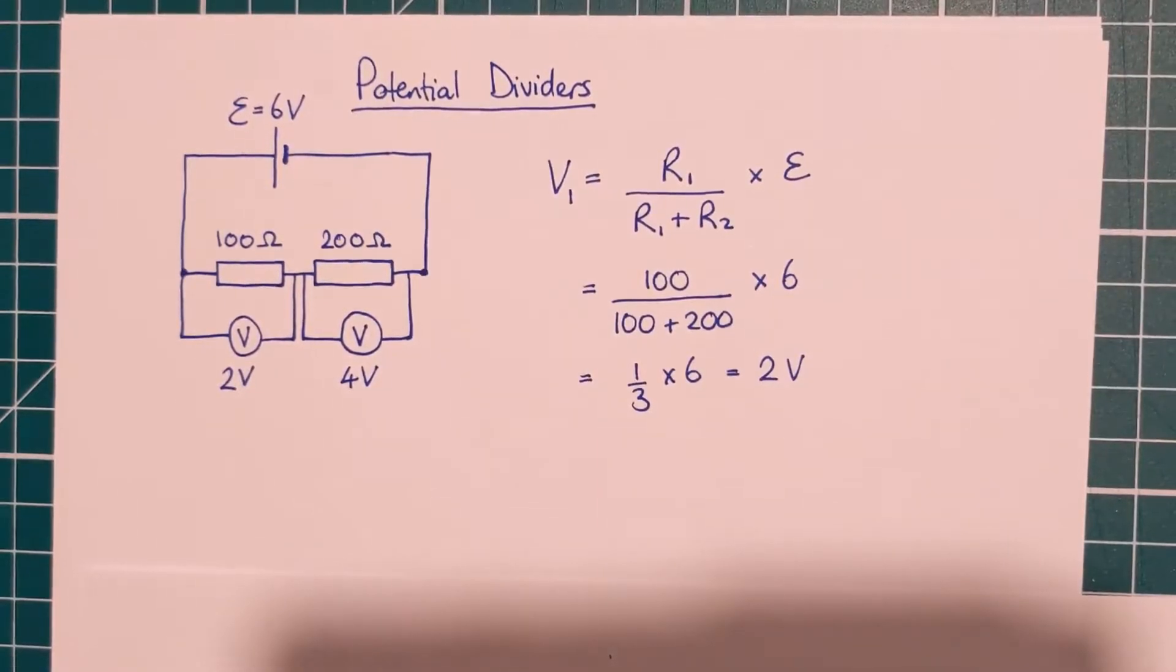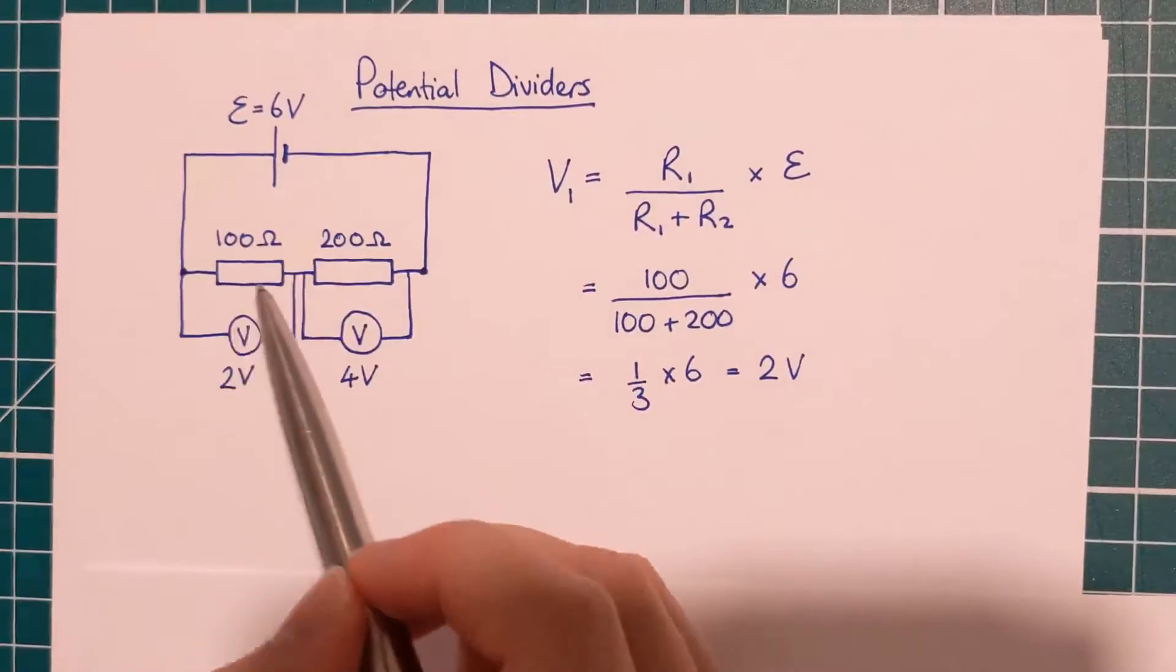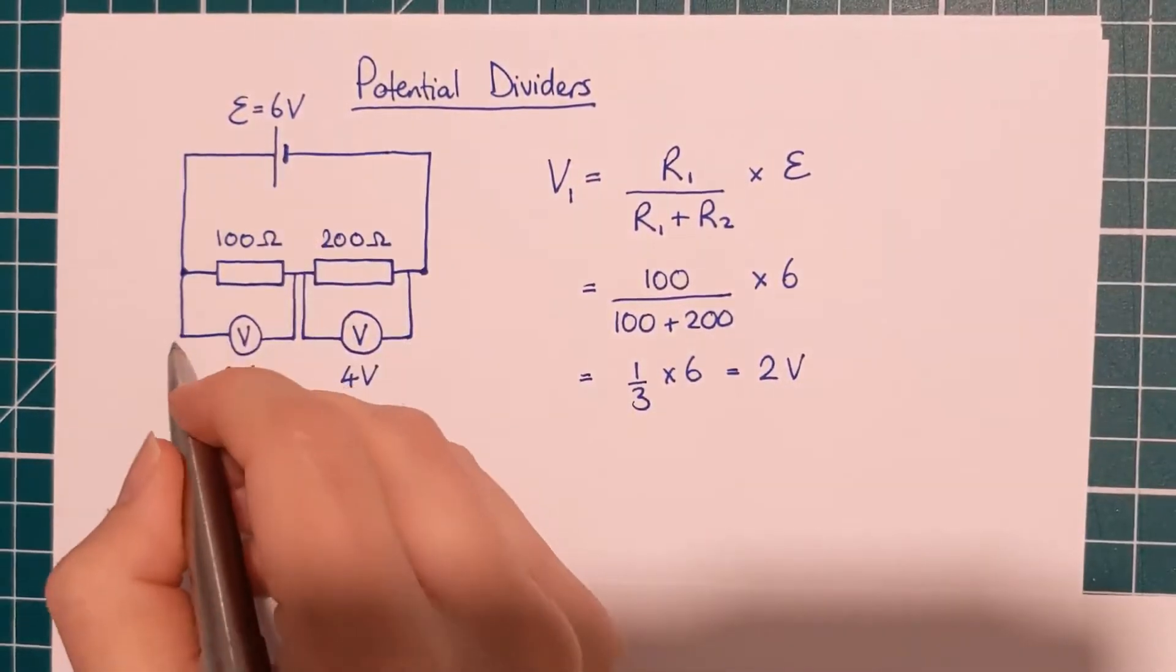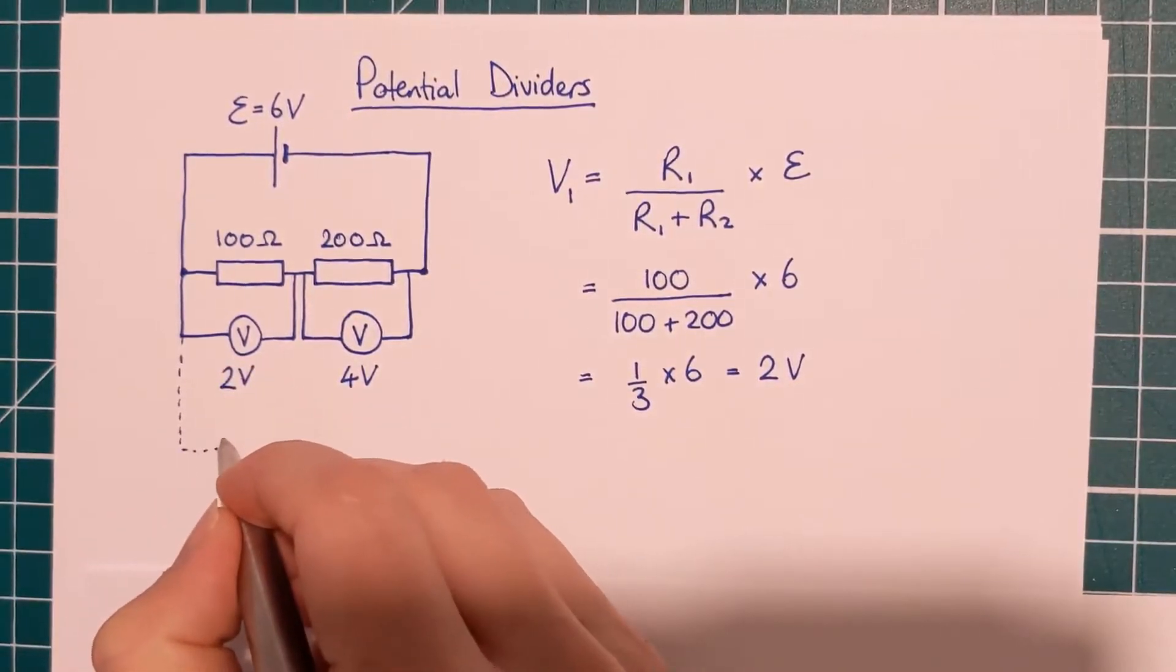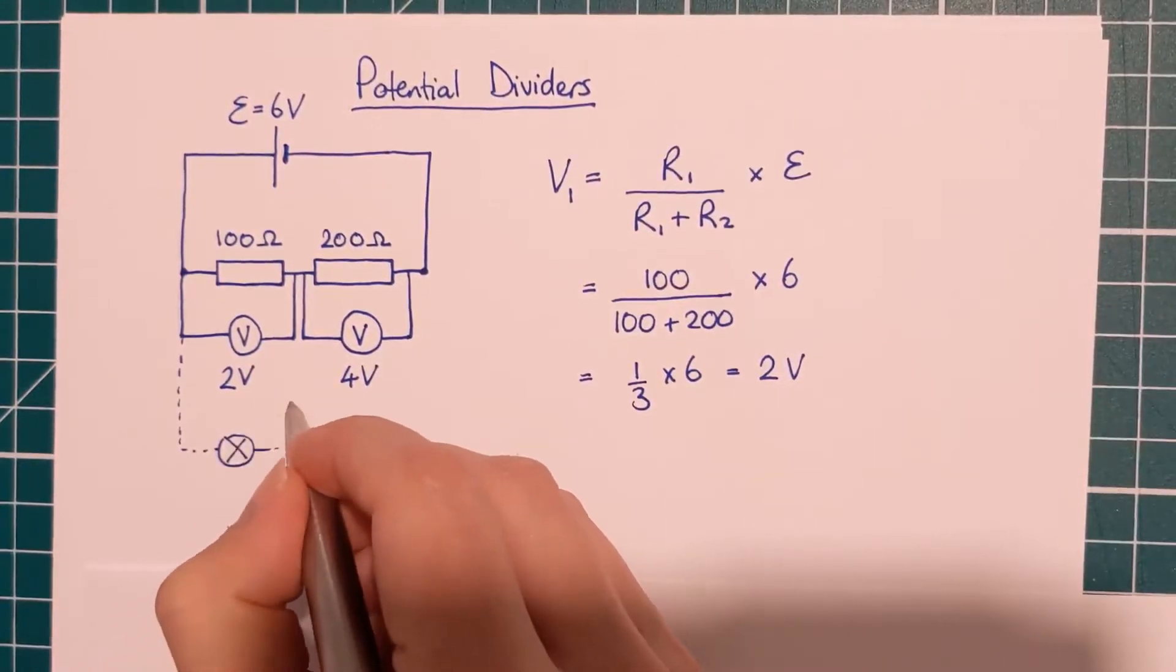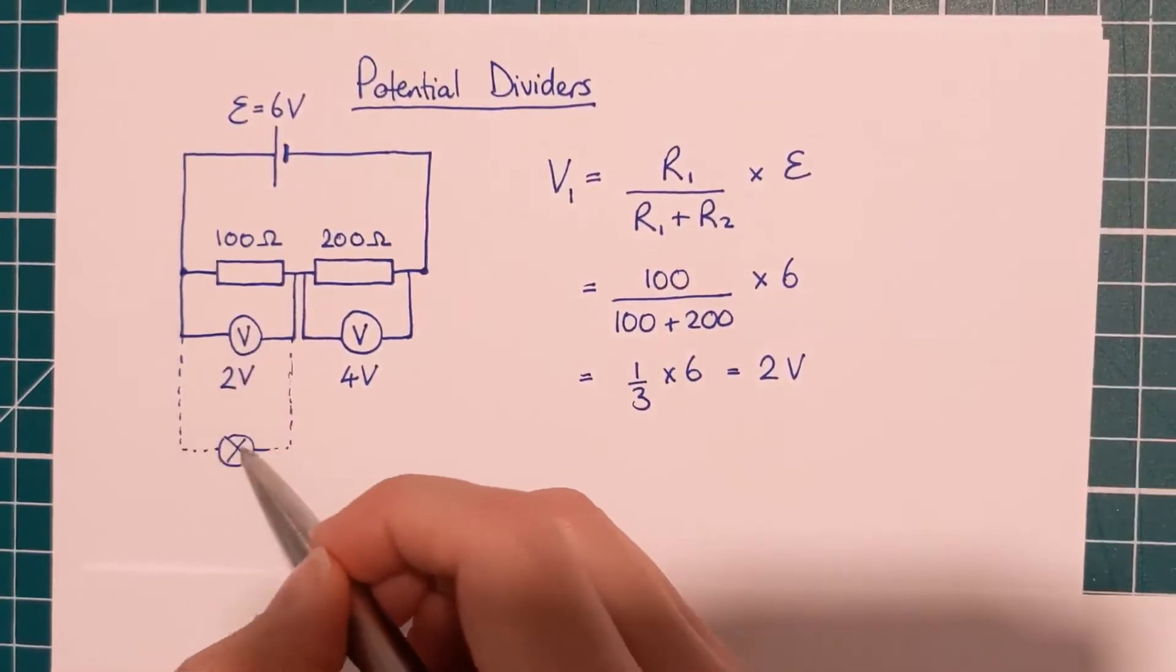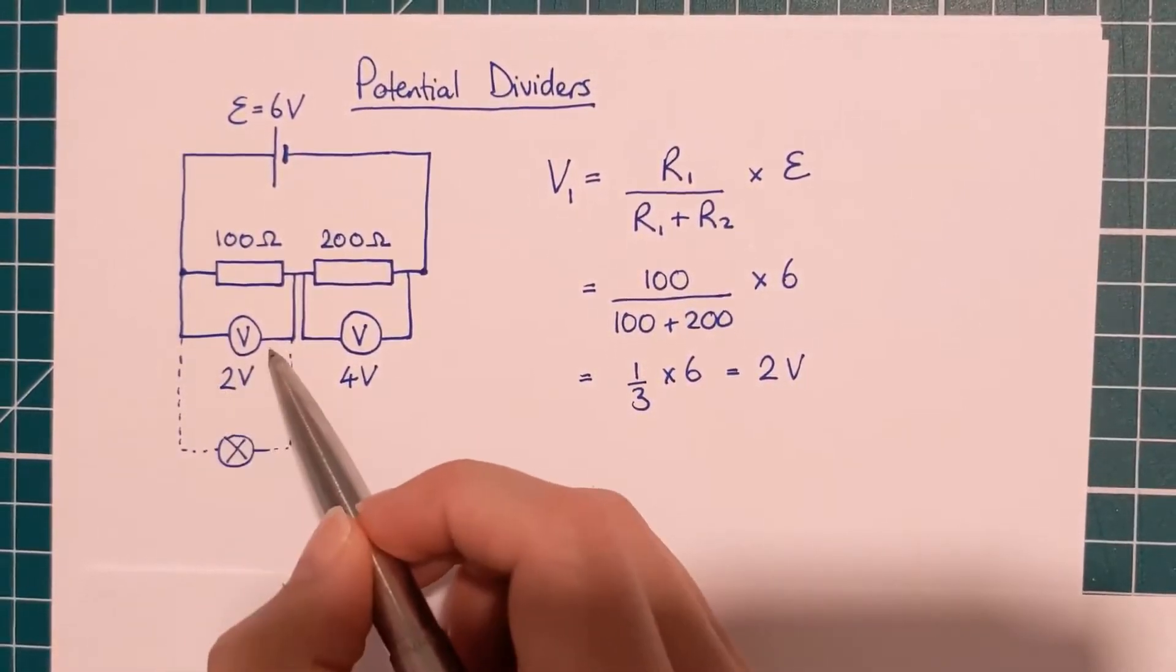The reason potential dividers are so important is because whereas this circuit has an EMF of six volts, if I attach another circuit on here, say a bulb or something, as far as this little sub-circuit is concerned, it's like it's only got an EMF of two volts.